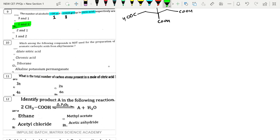Which among the following compound is not used for preparation of aromatic carboxylic acid from alkyl benzene? From alkyl benzene, let's say toluene, we will make carboxylic acid - benzene ring connected to COOH group. This process is oxidation. Dilute nitric acid is an oxidizing agent - correct. Chromic acid is an oxidizing agent. Alkaline potassium permanganate KMnO4 is also an oxidizing agent. Chromic acid is CrO3 in presence of H2SO4. But diborane, B2H6 with H2O2, is a reducing agent. So we don't use this agent.